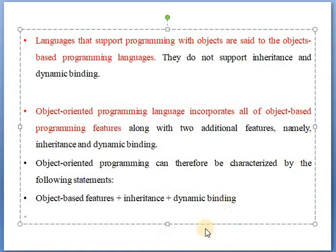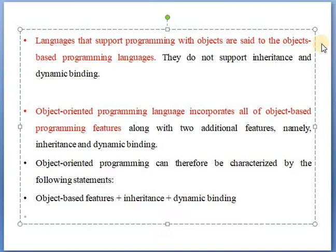The main difference between object based programming language and object oriented programming language is that object oriented programming language supports all the object based programming features, while in object based programming languages they do not support inheritance, polymorphism and dynamic binding.